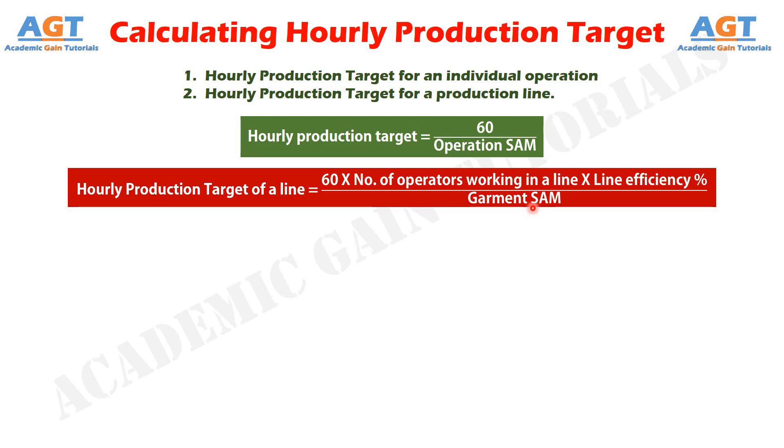If you need to calculate the daily production target of a line, just multiply the hourly line target by shift hours.